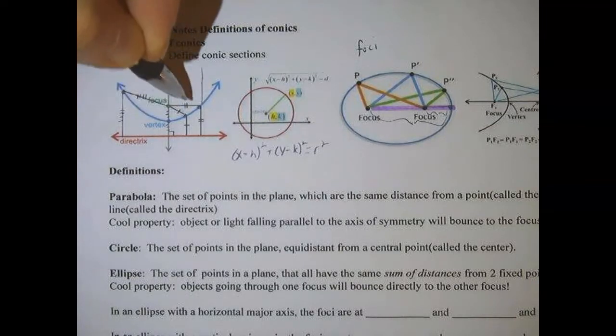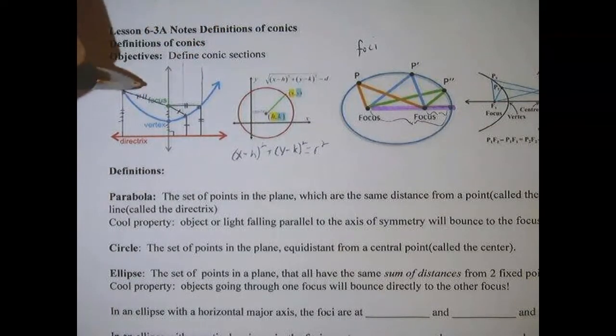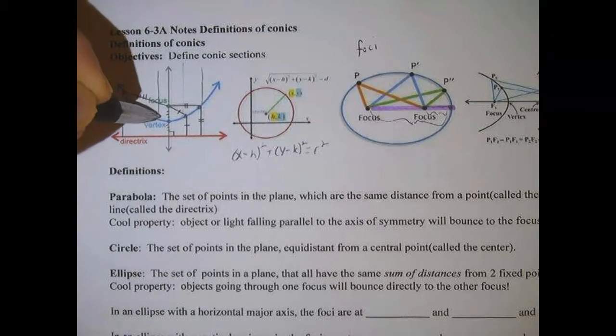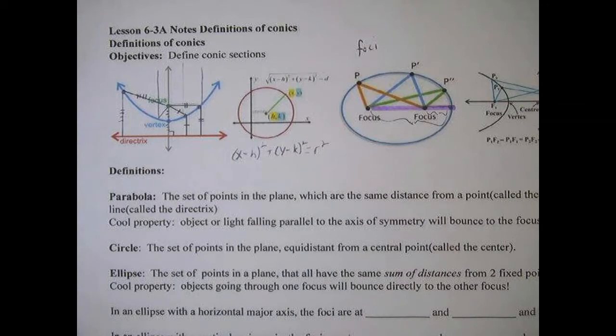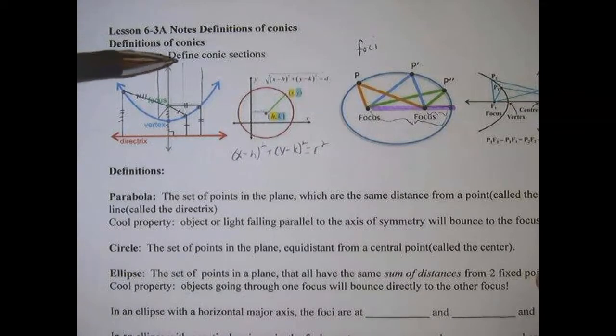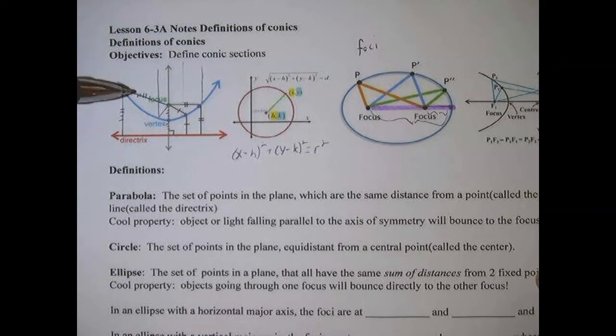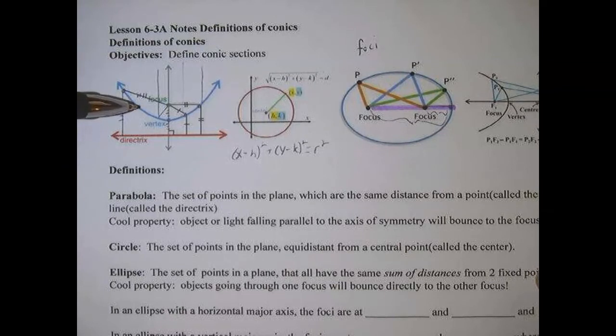They're going to all bounce, and this is a property of the parabola, they're all going to bounce directly into the focus. If it comes straight down here, it's going to bounce directly into the focus. That's one of the reasons it's called the focus, because all of the light, or it could be sound, will bounce directly into one place.